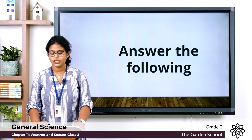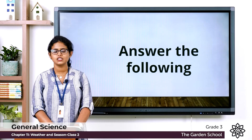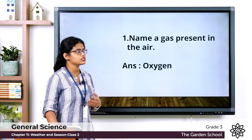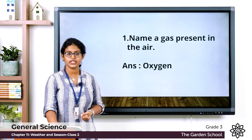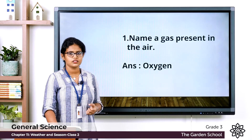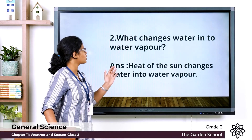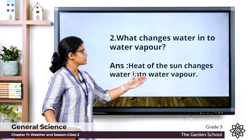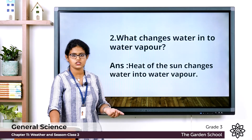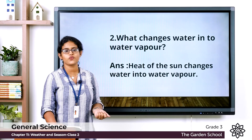Now let's answer the following questions. Once done, write them in your notebook. First: name a gas present in the air — oxygen, carbon dioxide, or nitrogen; you can write oxygen. Second: what changes water into water vapour? Heat of the sun changes water into water vapour, converting water from oceans, rivers, and seas into its gaseous form.